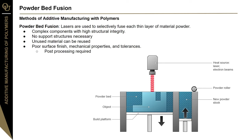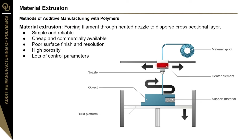Material extrusion is one of the most popular and recognized methods of additive manufacturing due to its simplicity and low cost for consumer application. This process involves a material filament forced through a heated nozzle; the layer below is melted by the application of a new layer, forming a bond as it cools, and this is repeated until the full 3D part is created. It's simple and reliable, making it extremely affordable for typical retail consumers. However, it has drawbacks including high porosity, poor surface finish, and low resolution, and there are significant control parameters that determine final print quality.